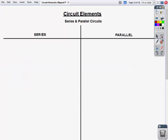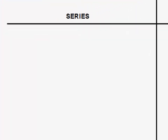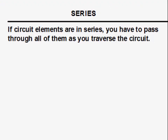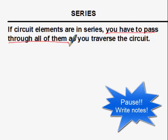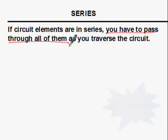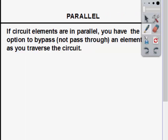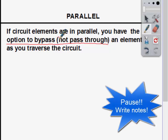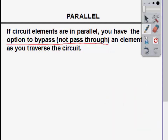Now let's talk about series and parallel circuits. If circuit elements are connected in series, that means you have to pass through all of them as you traverse the circuit. For a parallel circuit, you have the option to bypass an element as you traverse the circuit. If elements are in series you don't have the option to bypass; if they're in parallel, you do.